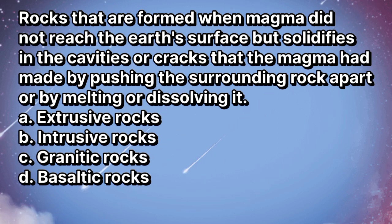Rocks that are formed when magma did not reach the earth's surface but solidifies in the cavities or cracks that the magma had made by pushing the surrounding rock apart or by melting or dissolving it. A. Extrusive rocks. B. Intrusive rocks. C. Granitic rocks. D. Basaltic rocks. The answer is letter B.